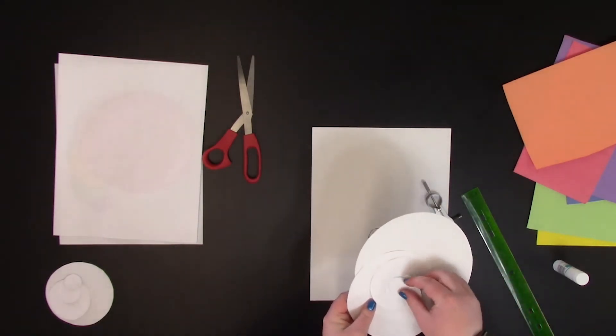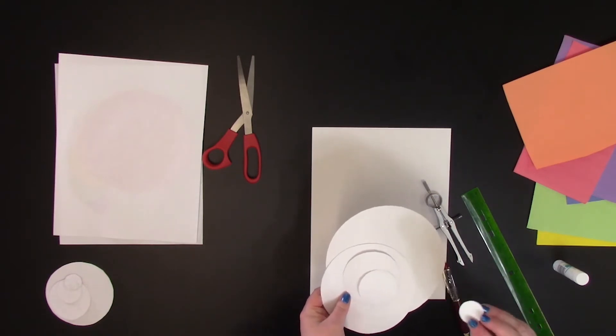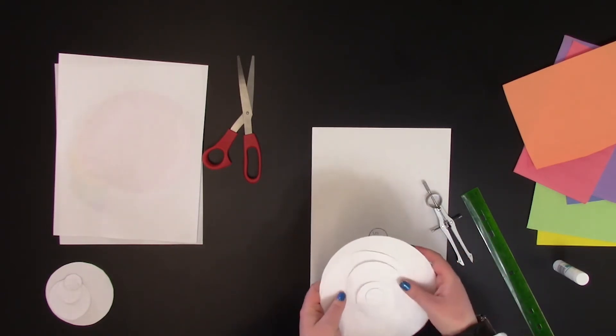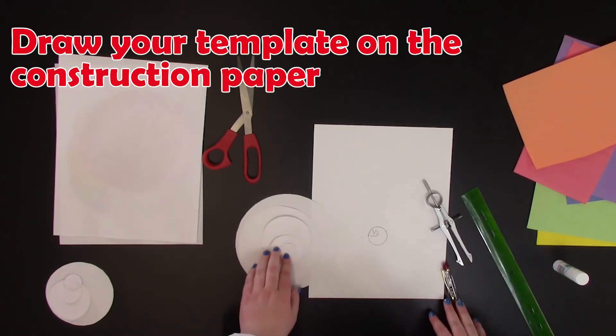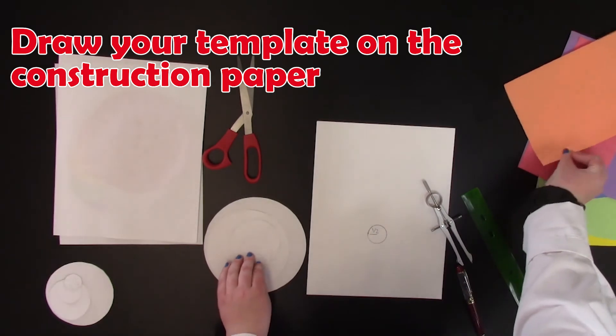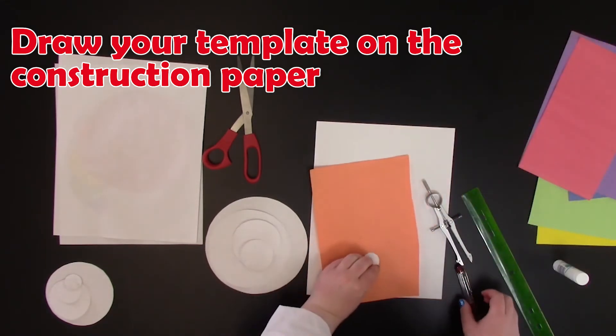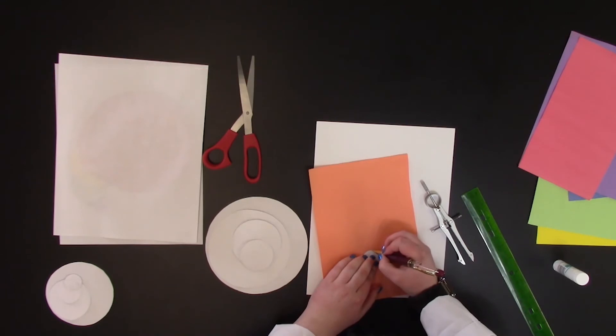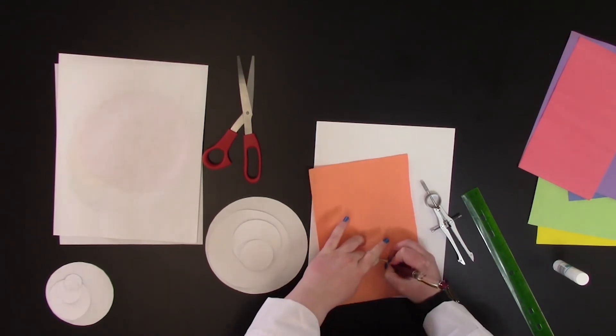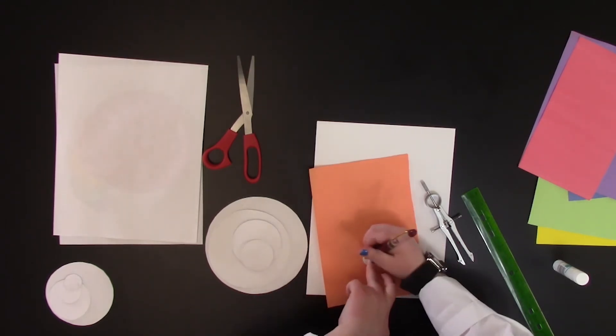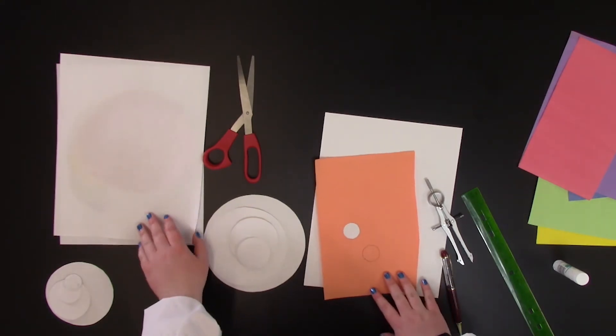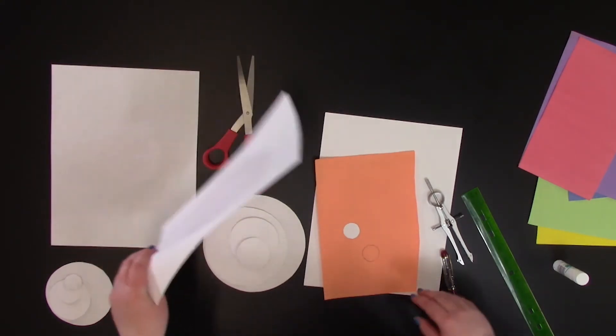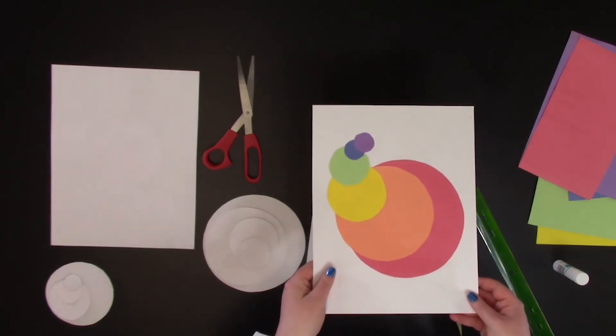So I have all my circles, and you only need five circles because the smallest one you will be using twice. Now you'll use construction paper and draw your template onto the construction paper. So I'll just show you one. Once you have six in whatever color you like, it turns into something like this.